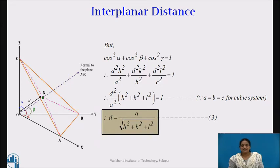We know that the sum of squares of the direction cosines of a line equals unity. Hence, if we further simplify the equation and as we know that for a cubic crystal, all the edges are same, that is A is equal to B is equal to C.